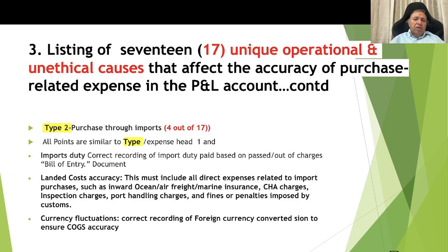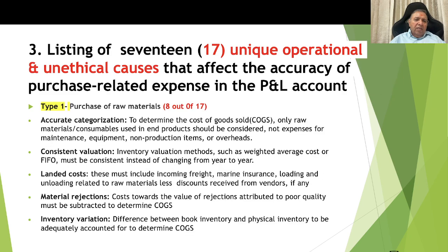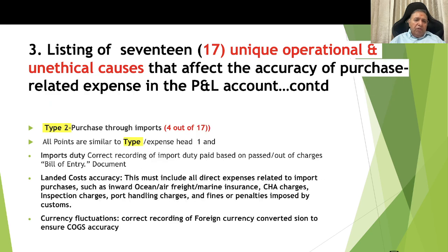Type 2, purchase through imports: there are 4 causes out of 17 applicable to imports. First, all 8 causes mentioned for Type 1 raw material purchases are equally applicable to imports. Additionally: import duty must be correctly recorded based on the passed out-of-charge bill of entry document. Landed cost accuracy must include all direct expenses such as inward ocean or air freight, marine insurance, CHA (Custom House Agency) charges, inspection charges by customs, port handling charges, and fines or penalties imposed by customs. Currency fluctuation: correct recording of foreign currency conversion is required to ensure accurate cost of goods sold.